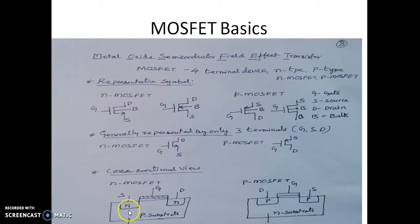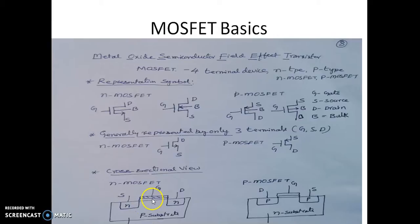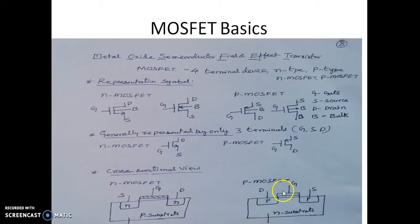The cross-section view of the MOSFET is given here. For N-MOSFET there are N+ regions for drain and source, a P substrate, an oxide layer, and the gate terminal, source, and drain. Similarly, for P-MOSFET this is how the cross-section view looks.